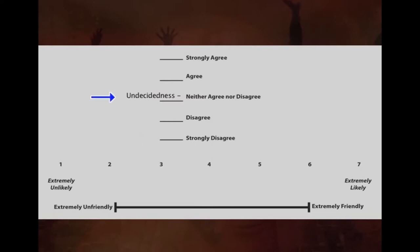Another important consideration in the Likert scale is that there are no right or wrong answers. It is also very important to consider both positive and negative statements equally. Generally, the Likert scale is a five-point scale in terms of strongly disagree, disagree, undecided (or neither agree nor disagree), agree, and strongly agree, where the respondent rates where he stands with a particular statement.